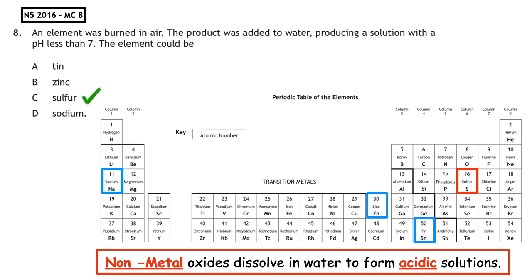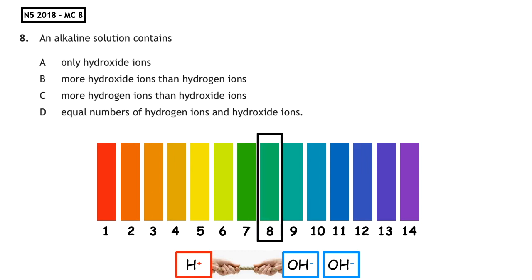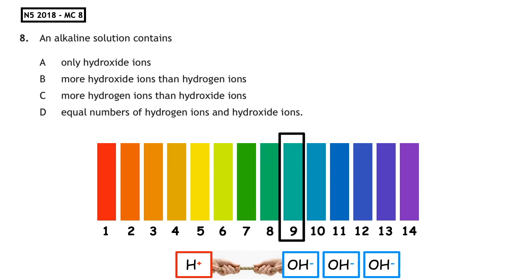The answer is multiple choice C. This past paper question is from the National 5, 2018, multiple choice 8: 'An alkaline solution contains...' We look at our tug of war. We know that an alkali has a pH greater than 7, which means it has more OH- ions than H+ ions — more hydroxide ions than hydrogen ions. So the correct answer is multiple choice answer B.